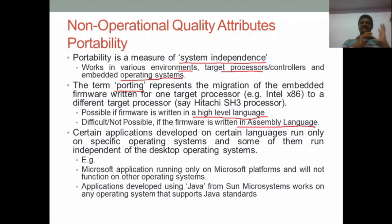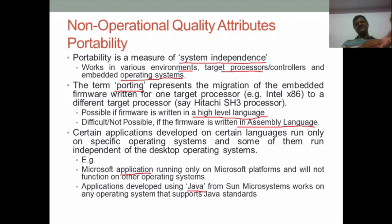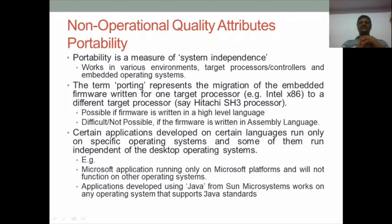There are many platforms that are completely system-dependent and some that are system-independent. For example, Microsoft applications are completely system-dependent — they only work on Microsoft-based operating systems. In contrast, Java applications can work not only on Windows but also on Linux, Mac, and other operating systems. The kind of programming language you use determines portability. Portability is more comfortable with firmware compared to hardware, though hardware portability is possible but very rare.